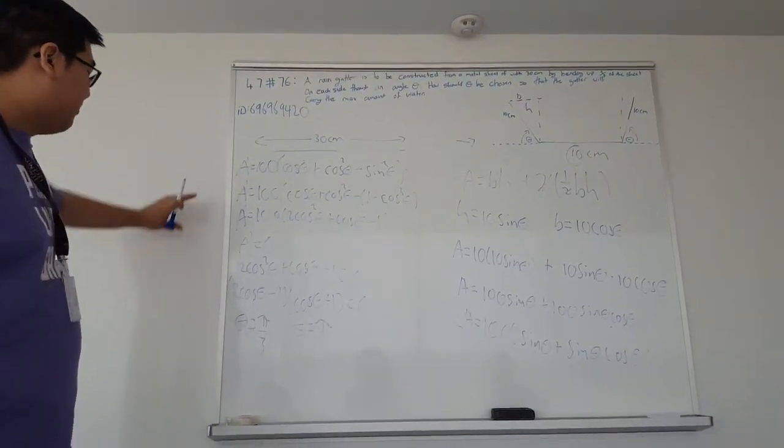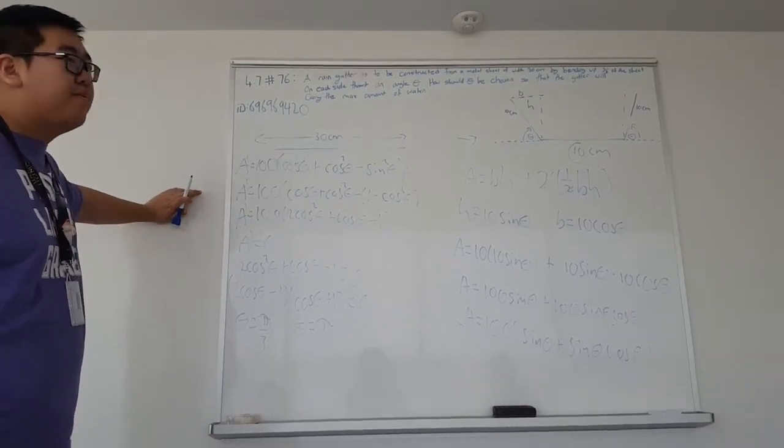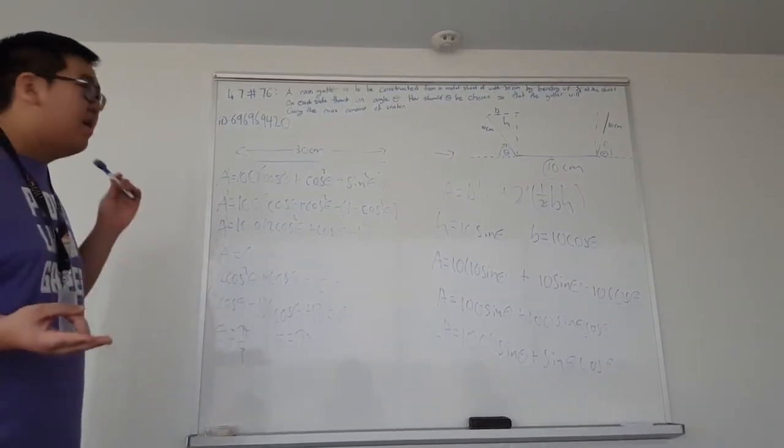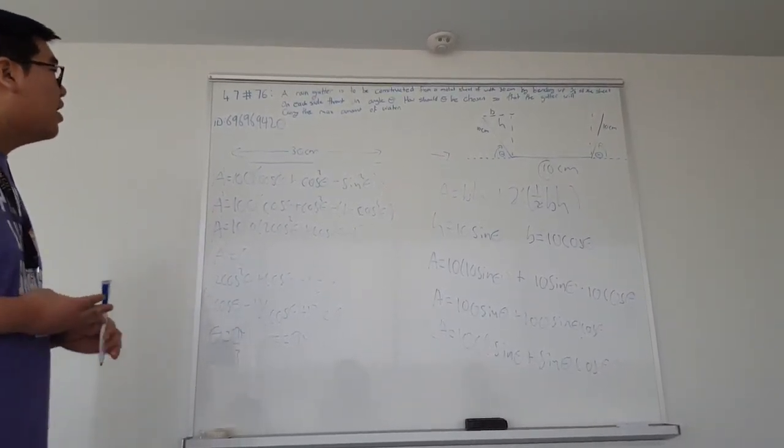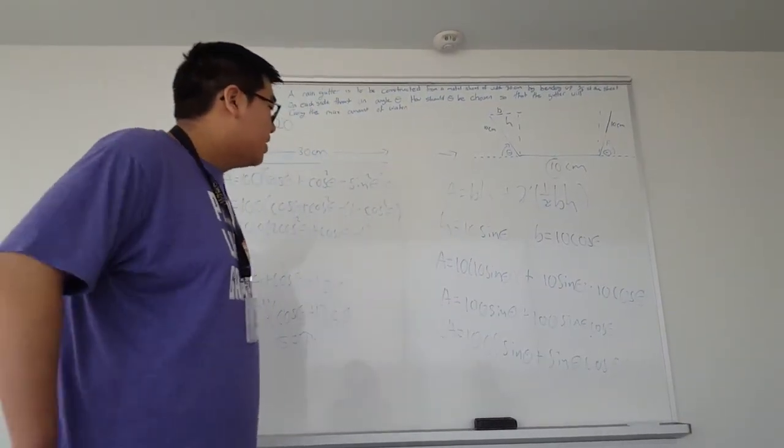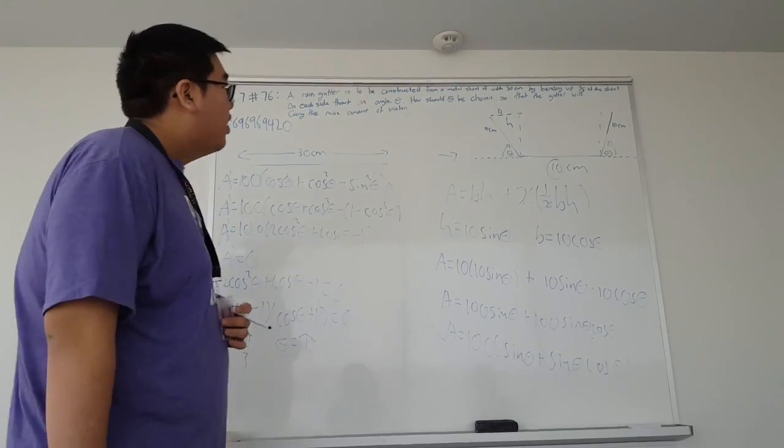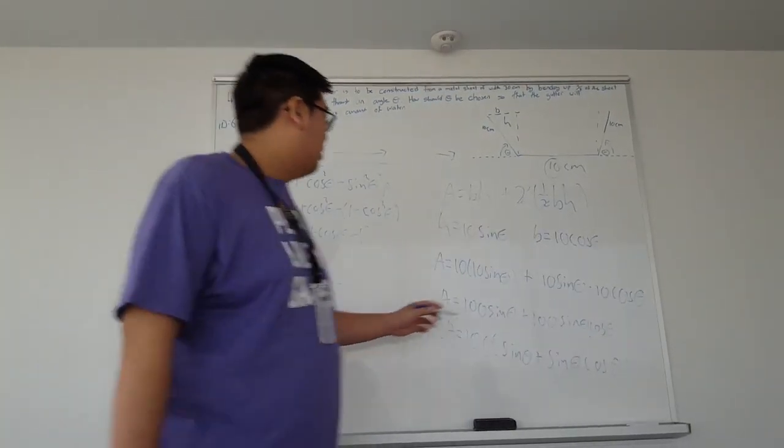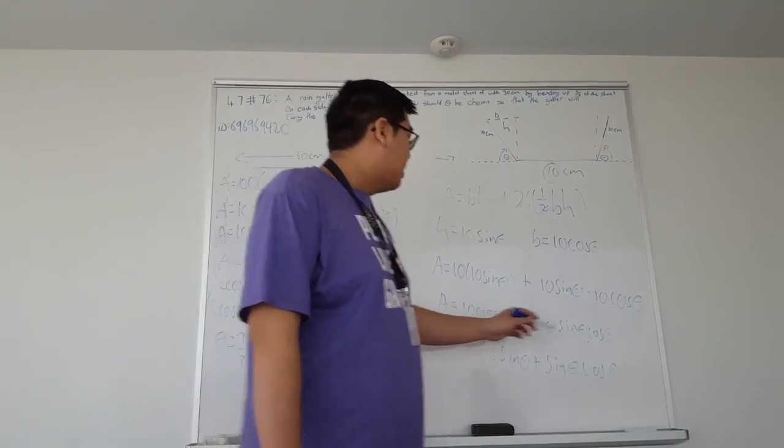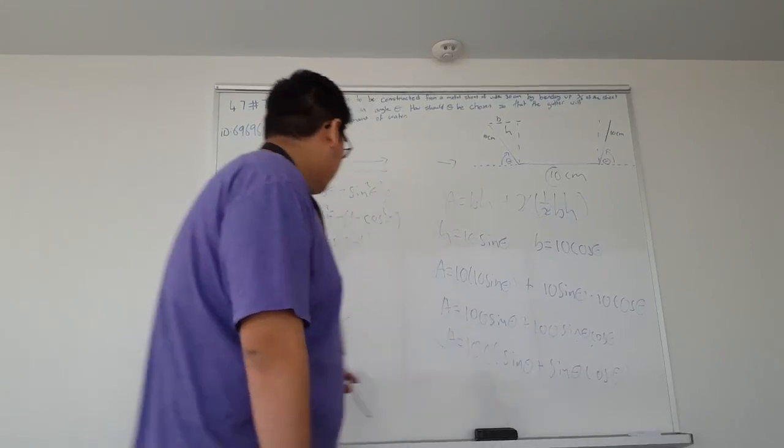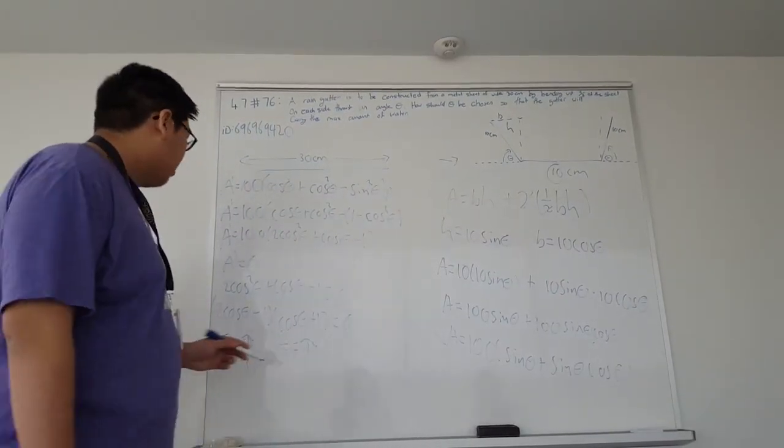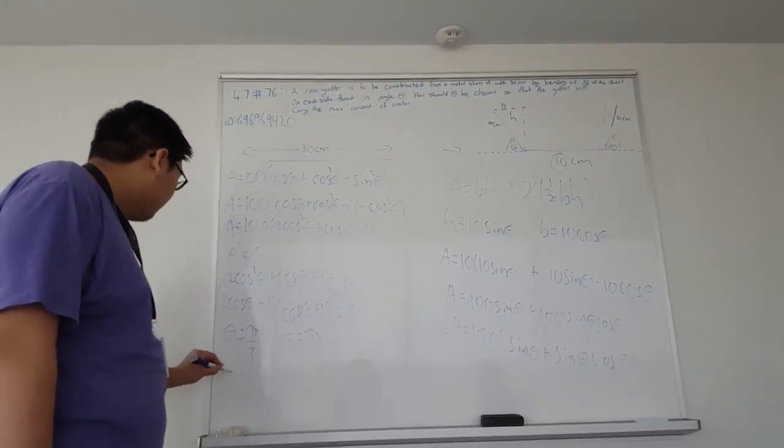So now we can set our angle and our area to the endpoints in which theta is equal to 0, pi over 3, and pi back into our original area equation of 100 sine theta plus 100 sine theta cos theta. But if we sub in a theta of 0, sine theta is equal to 0, we would get 0 here. And same with angle of pi. So that leaves us with an angle of pi over 3.